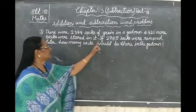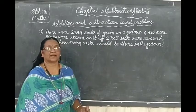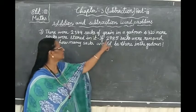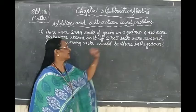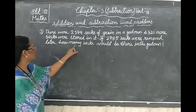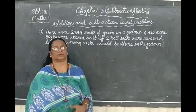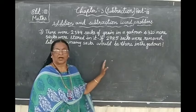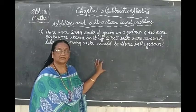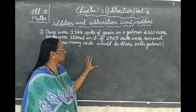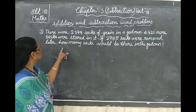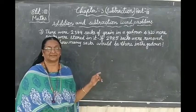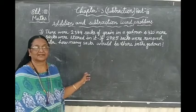Then, if 2,785 sacks were removed, after some time they removed 2,785. How many sacks would be there in the godown? So what we have to do, we have to add first and find out how many sacks are there total. Then we have to subtract how much they have removed. Shall we start doing?